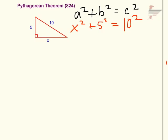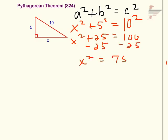Now I've got an algebra problem to solve: x squared plus 25 equals 100. Subtract 25 from both sides. x squared equals 75.